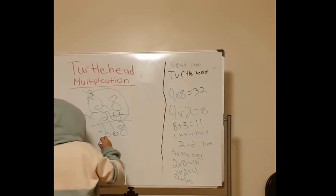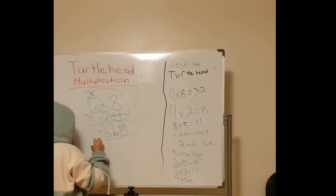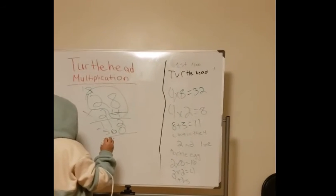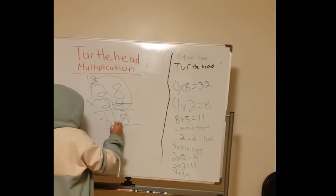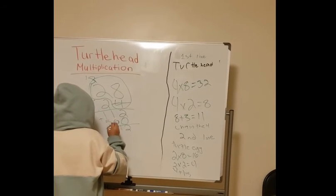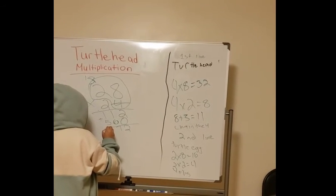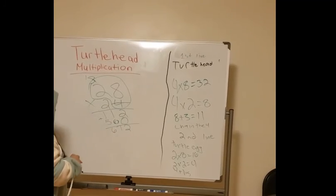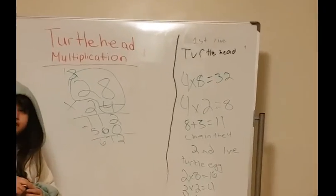Now I would add 112 plus 560. 2 plus 0 is 2. 1 plus 6 is 7. And 1 plus 5 is 6. So my answer would be 672.